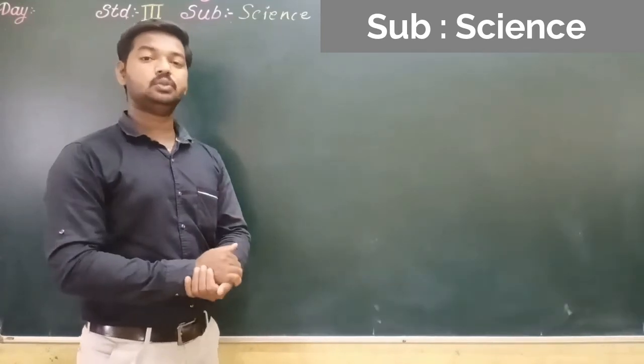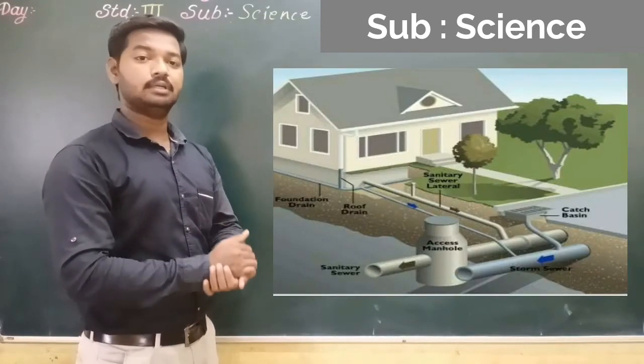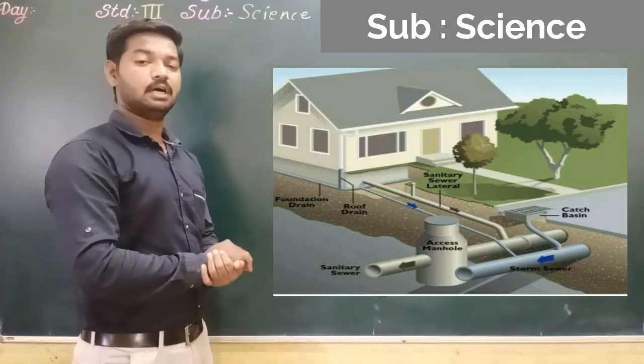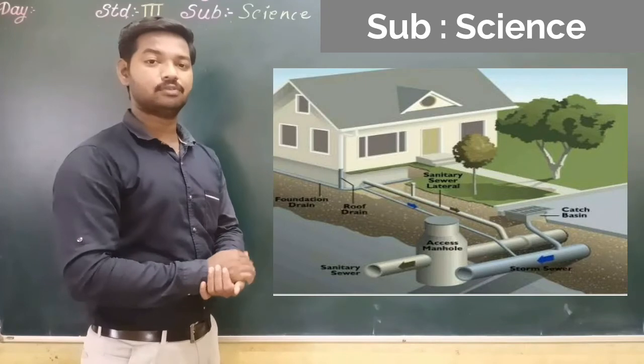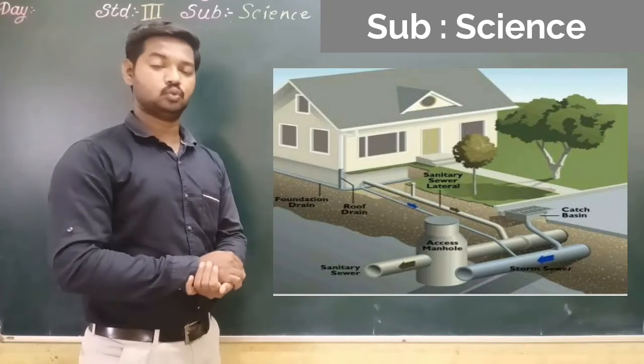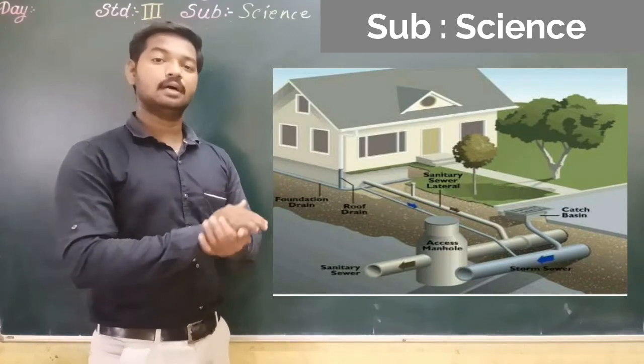Number three, it should have a proper drainage system to keep dirty water away from our house. The drains carrying water from kitchens and bathroom should be properly covered to keep mosquitoes away.